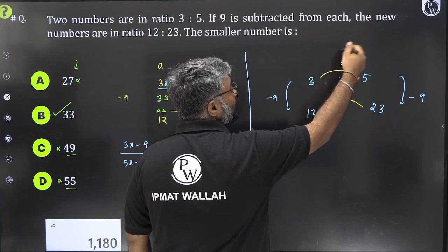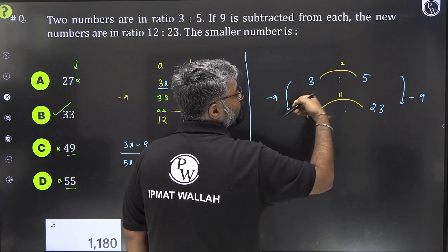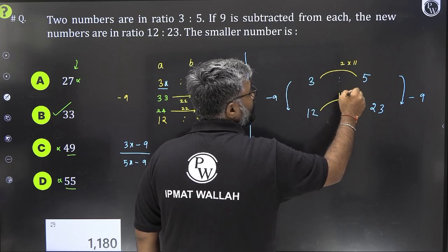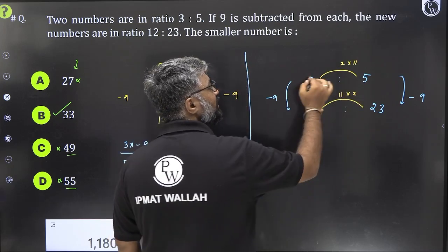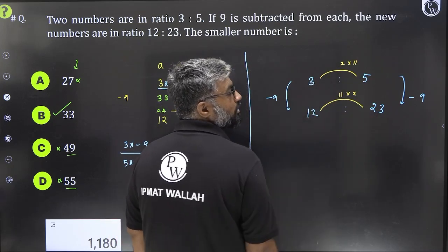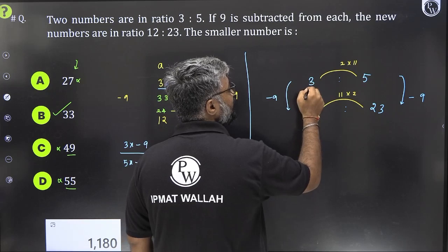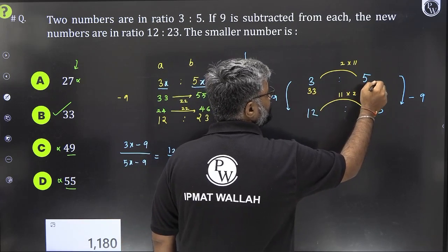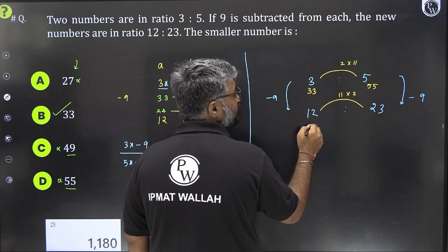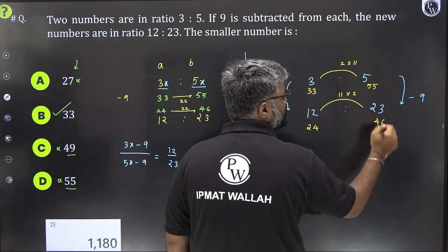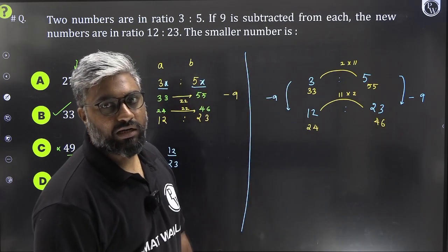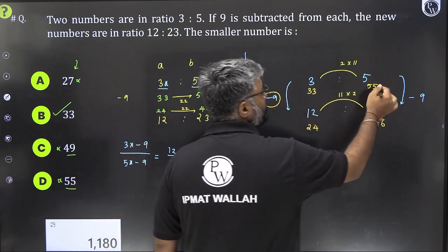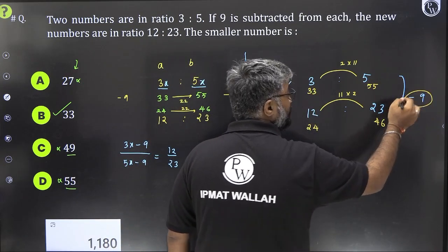Ya toh 2 ko 11 kar do which is not possible ya 11 ko 2 kar do which is not possible but dono ko, dono ko main 22 kar sakta hoon. Kaise? Isko 11 se multiply karke aur isko 2 se multiply karke. So, isko jab main 11 se multiply karunga, yahan aaya 33 aur yahan aaya 55. Isko jab main 2 se multiply karunga, yahan aaya 24, yahan aaya 46. Now we have the actual numbers. Kaise? 33 minus 24 is 9, 55 minus 46 is 9.